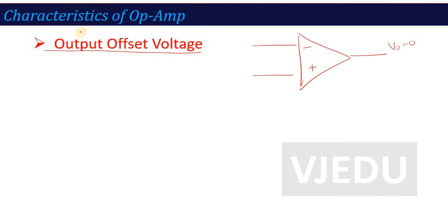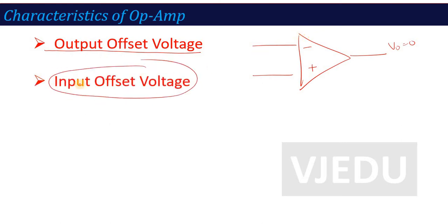Now, to null this output offset voltage, we use pin number 1 and 5, where we apply a voltage at the input side. That particular voltage is called input offset voltage. Its definition: the value of the input voltage required to reset the output offset voltage to zero. The voltage applied at the input terminals to make the output offset zero is called input offset voltage.